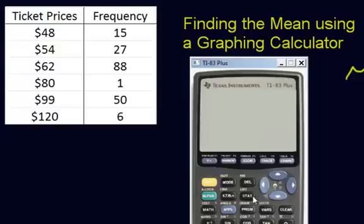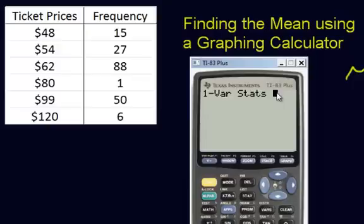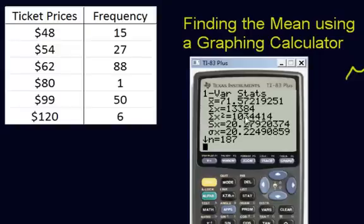And then we'll go back to list again. Second column where it says calc, do your one variable stats. Now your left column should be your ticket prices, comma, and then L2, which should be your frequency, press enter. And we got 71.57, which is exactly what we got in the previous video. Again, you can ignore some of this other stuff. We can talk about that later in different videos. But right now, this is all I wanted to show you in this video, is how to find the mean using a graphing calculator.